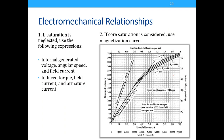Saturation occurs when there's too much magnetic field and the motor core cannot handle it, causing the relationship for the field to become nonlinear. We will not deal with saturation — neglecting it, we analyze DC machines simply as circuits.